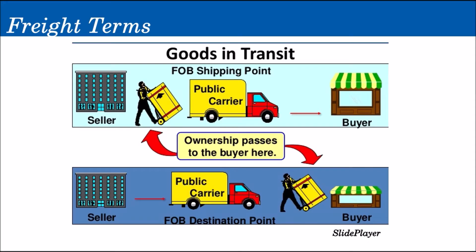Let's say, for example — hopefully this doesn't happen — but while the ship carrying the merchandise is in transit and it sinks, then it's too bad for the buyer, because the seller already passed ownership of the merchandise to the buyer. Because under FOB Shipping Point, title will pass to the buyer in transit.